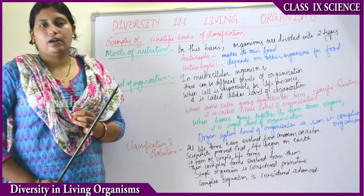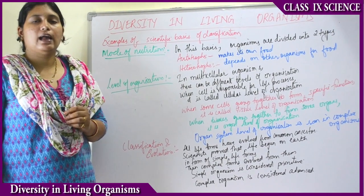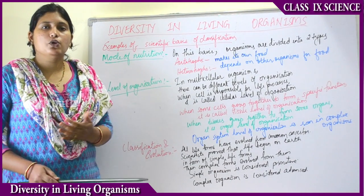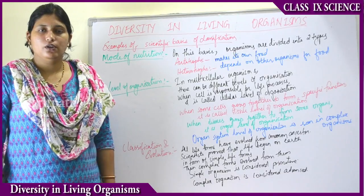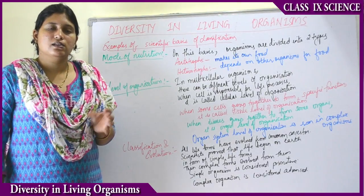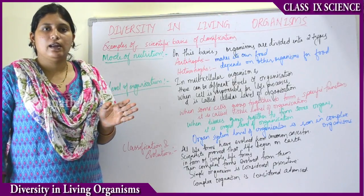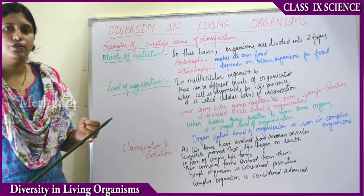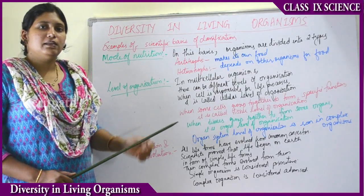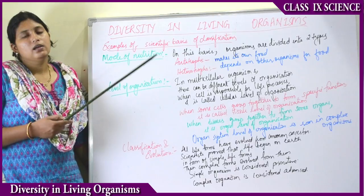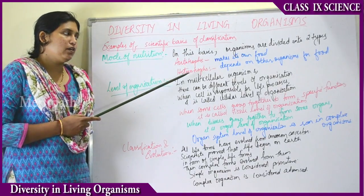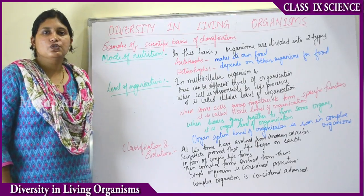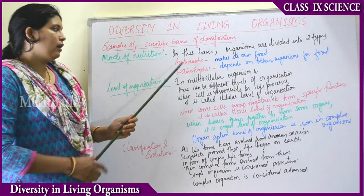Based on the mode of nutrition — how they prepare or intake food — organisms are classified into autotrophs and heterotrophs. Autotrophs are organisms that can prepare their own food. Only plants can do this: in the presence of sunlight, they take minerals and water from the soil and carbon dioxide and oxygen from the air to prepare food through photosynthesis.